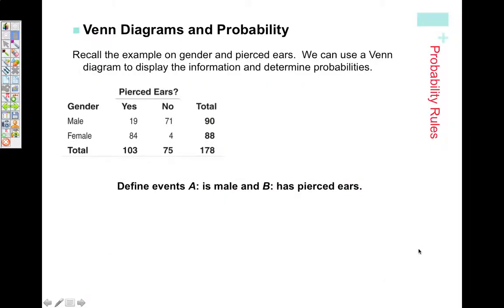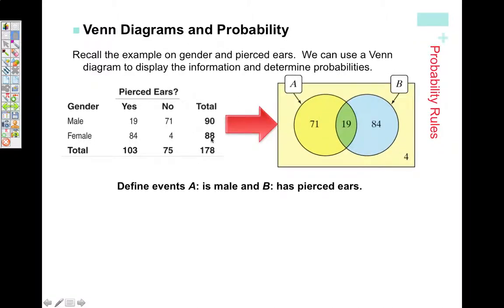Here we have our pierced ear problem again. We can display all of this information on a Venn diagram as such: 19 in the overlap, 4 that don't fit either category. They don't have pierced ears and they're not males. 71 are male without pierced ears, and 84 have pierced ears but are not male.